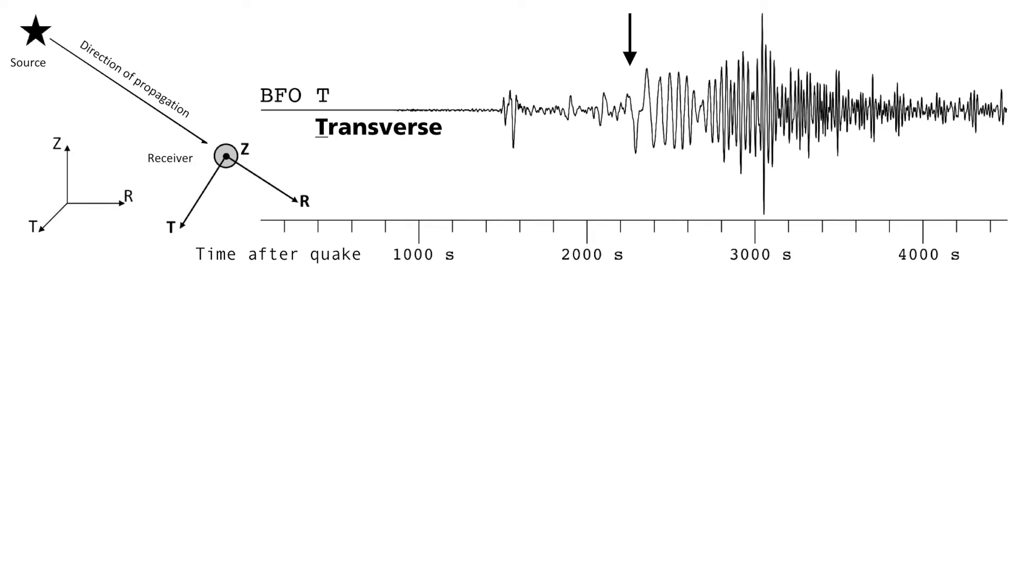Generally, a seismometer measures the motion of the ground in the three spatial dimensions. The two horizontal directions are measured in the north-south and east-west direction. For the evaluation of individual earthquakes, they are rotated via calculations and labeled with an r for radial and t for transverse.